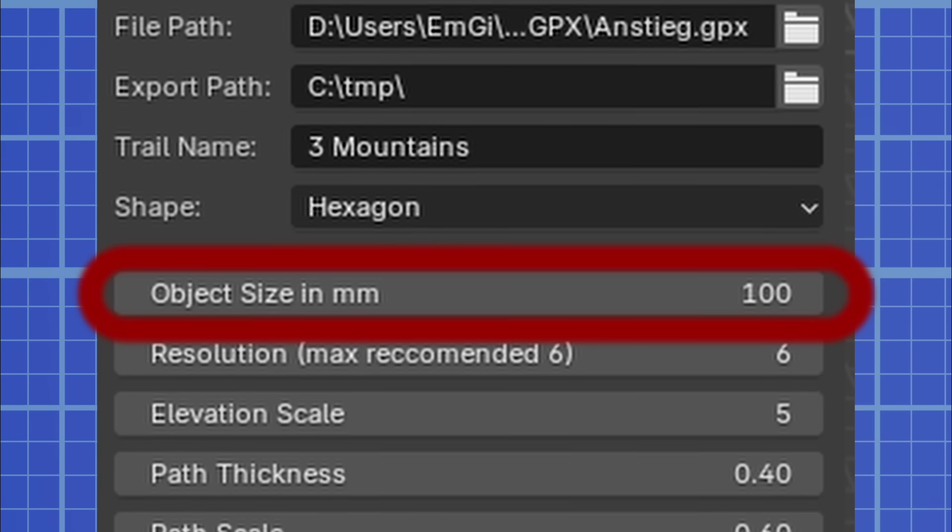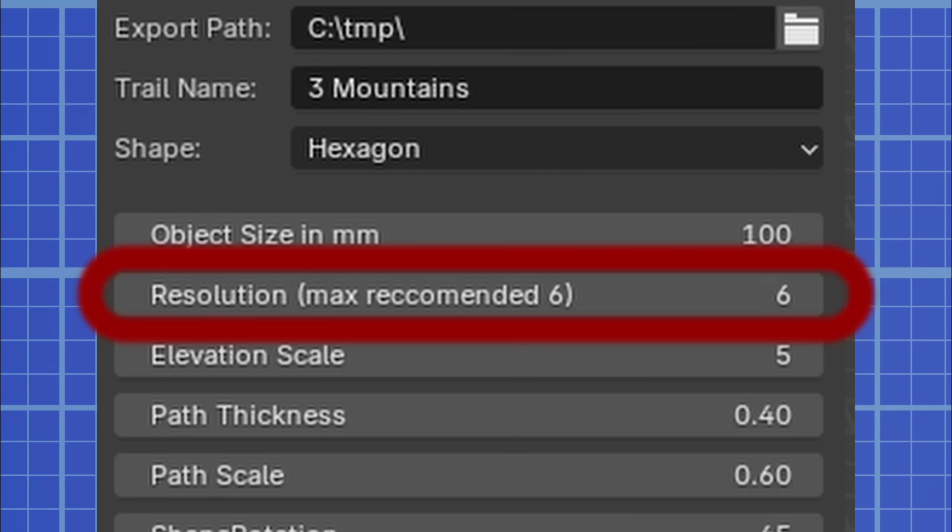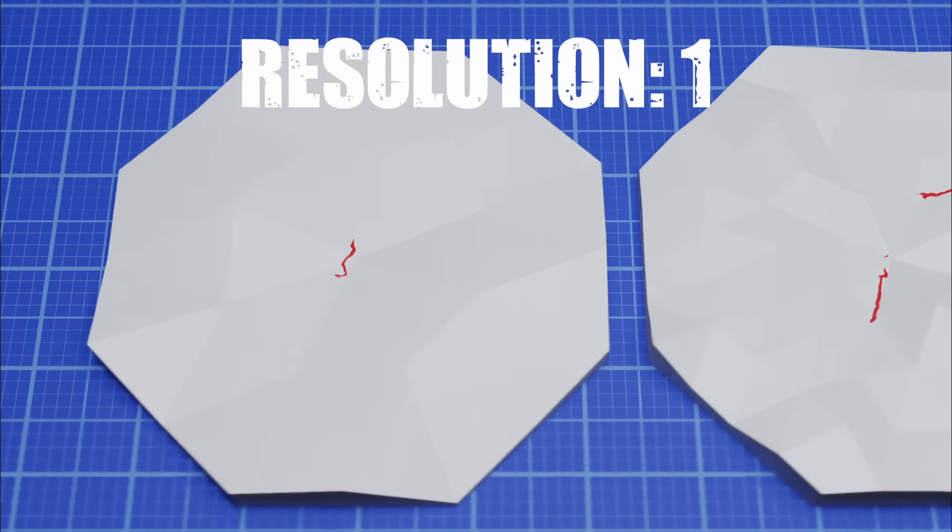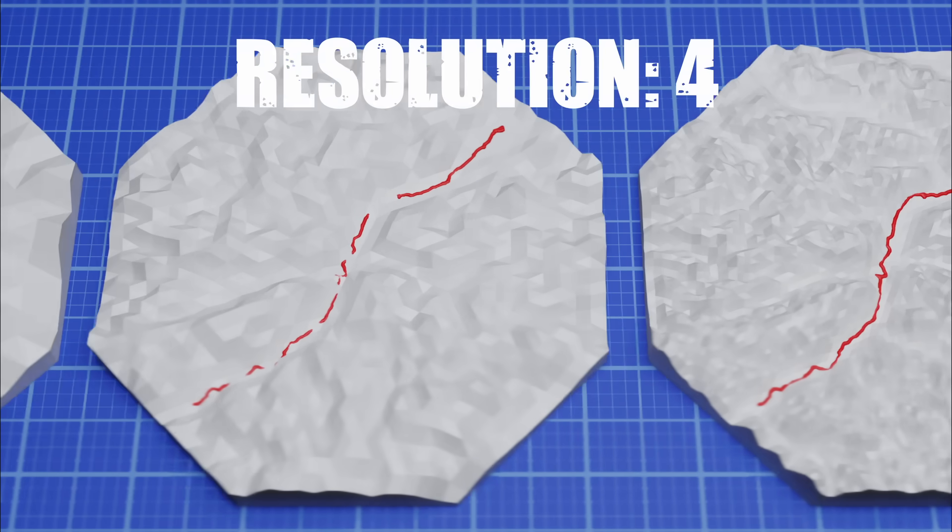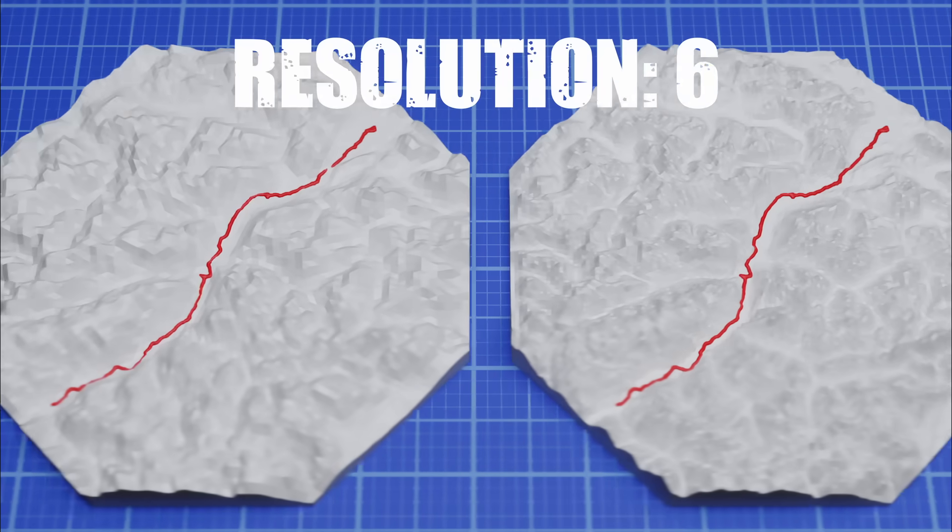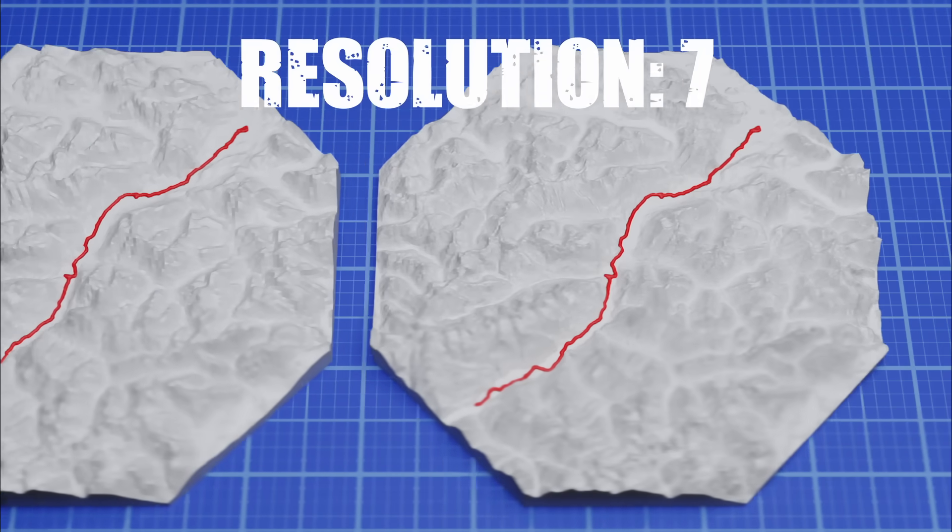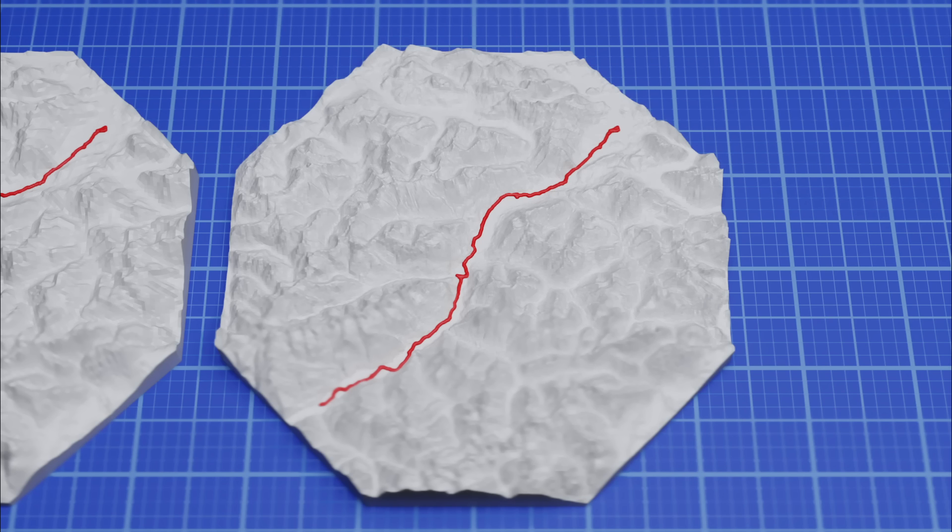The object size is the size of the finished map in millimeters. A higher resolution means higher quality, but exponentially longer generating times because of the API limits. A hexagon with a resolution of 6 takes about 3 minutes, while a resolution of 7 takes about 10 minutes to generate. I recommend using a maximum value of 6 or 7.